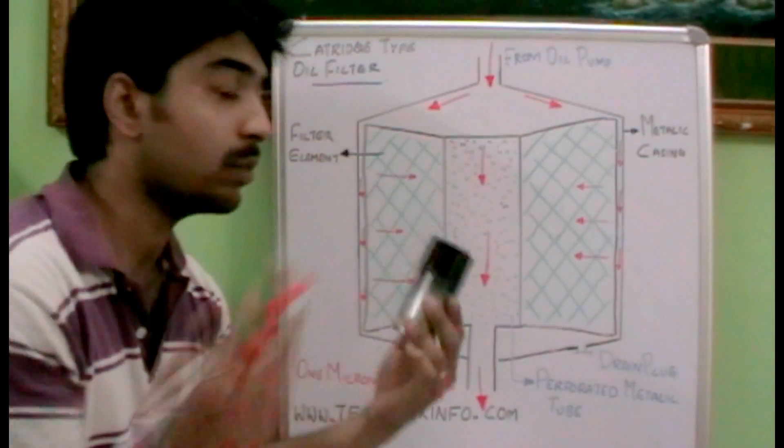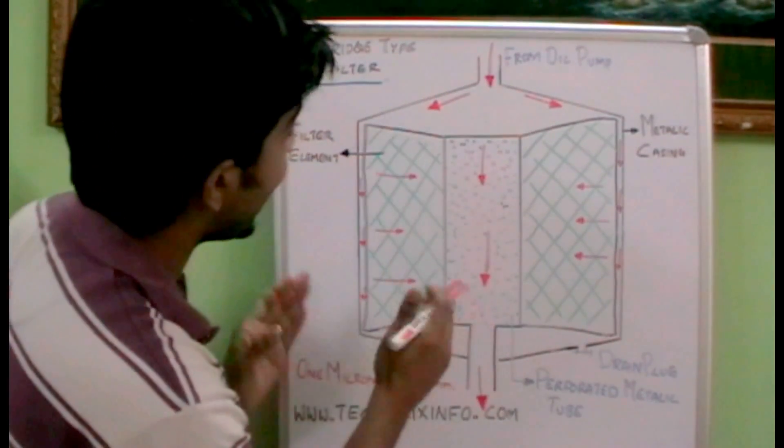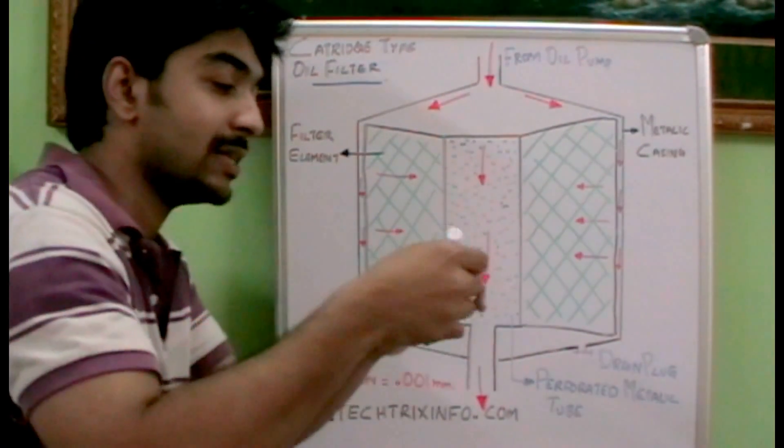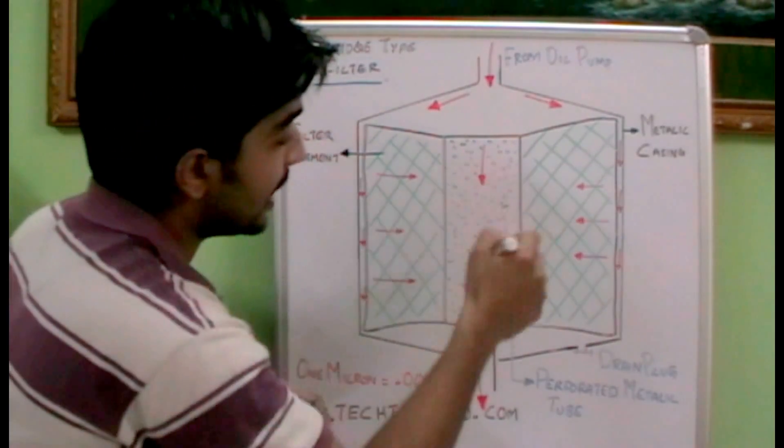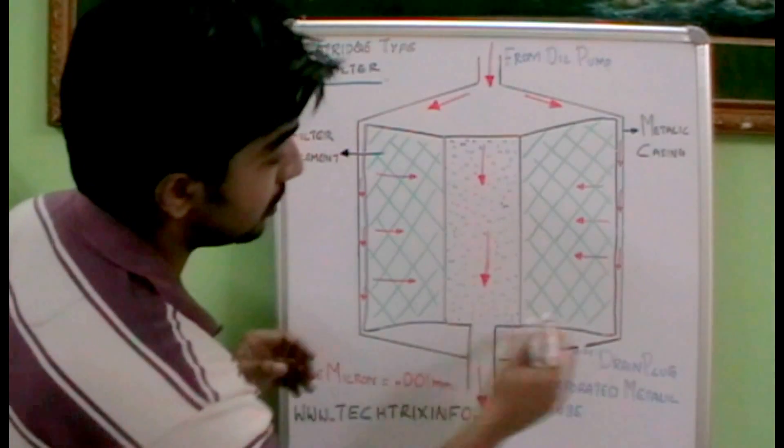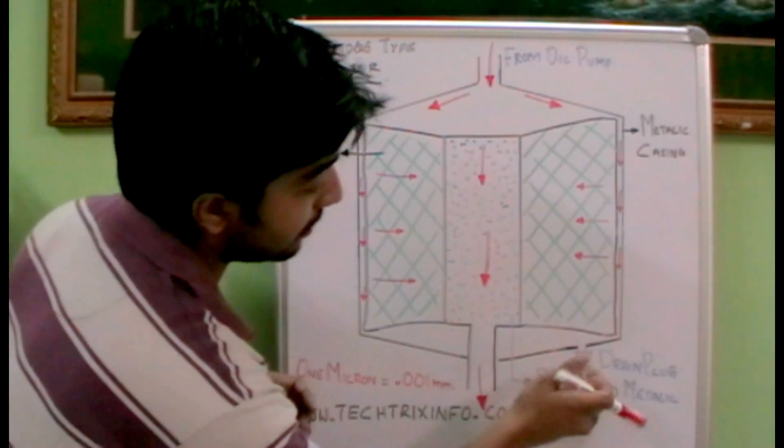And inside what we have is filtering element all around it, inside the metallic casing all around we have this filtering element. In the center we will be having a perforated metallic tube, and on the bottom we have a drain plug.